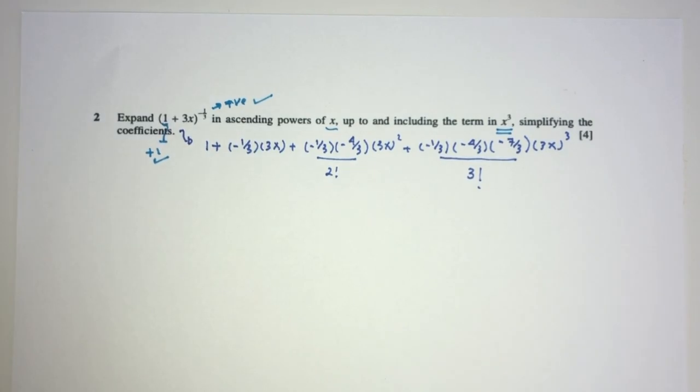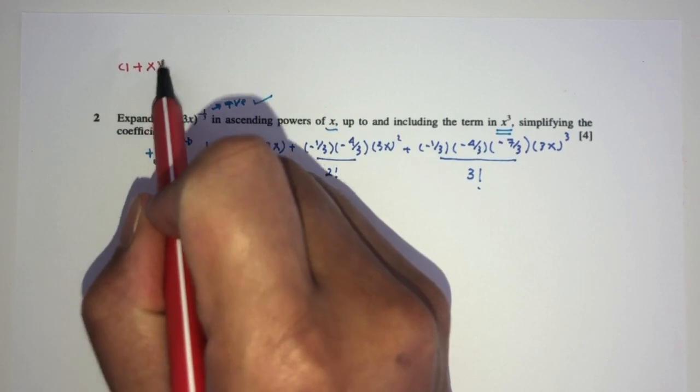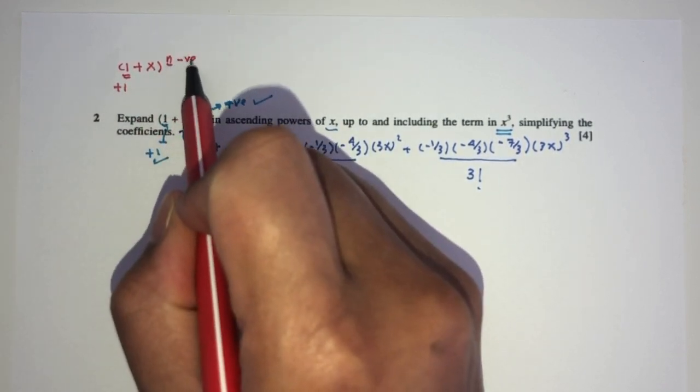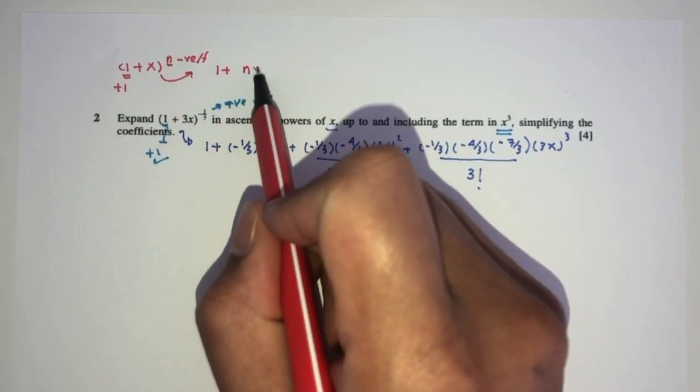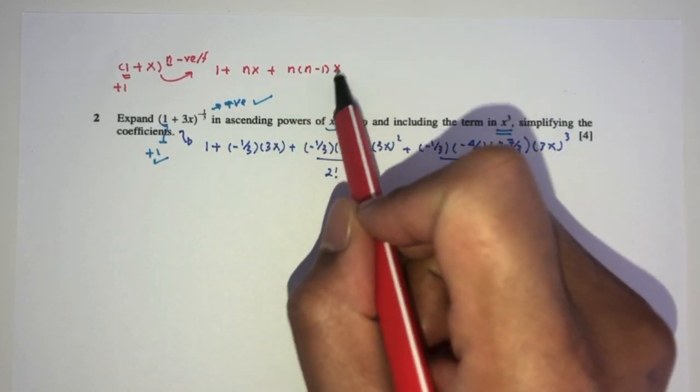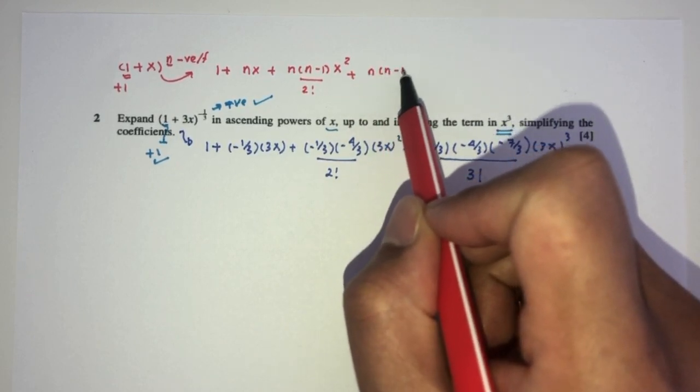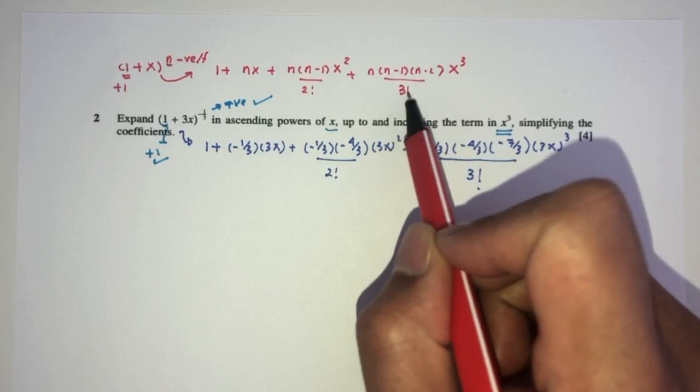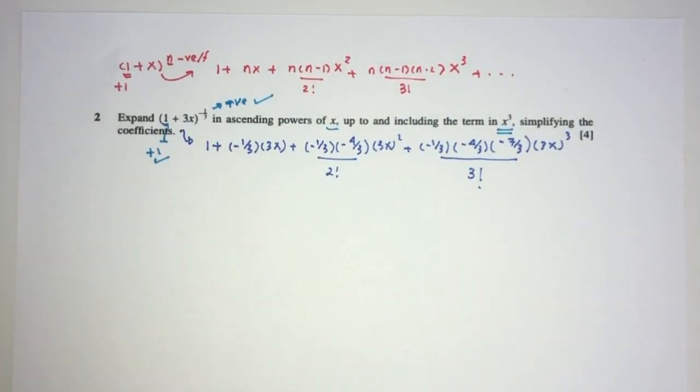This thing is just a formula you have to know for the binomial expansion. You should know if you have 1 plus x to the power n, this has to be plus 1, and this has to be negative or a fraction or both. We can use this expansion as 1 plus nx, plus n times n minus 1, x squared by 2 factorial, plus n times n minus 1 times n minus 2, x cubed by 3 factorial, and so on. As you can see, we're just replacing the values inside this formula to solve this.